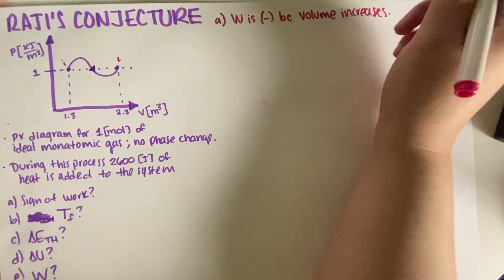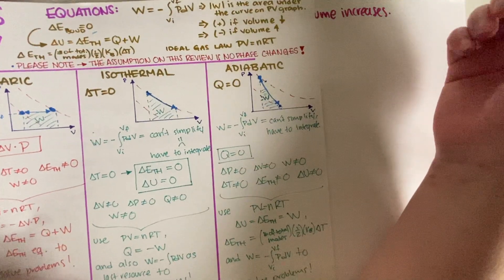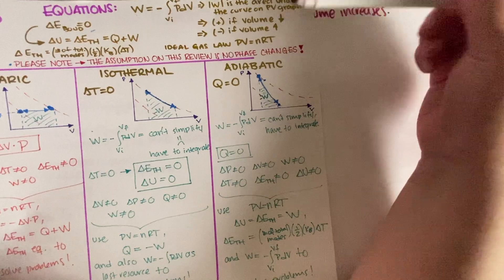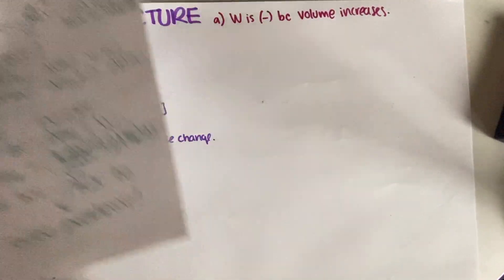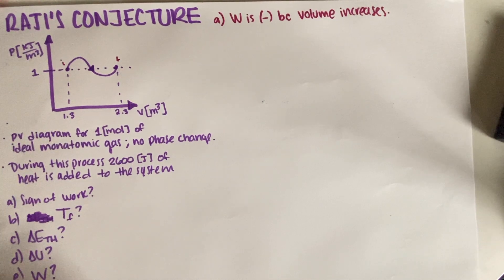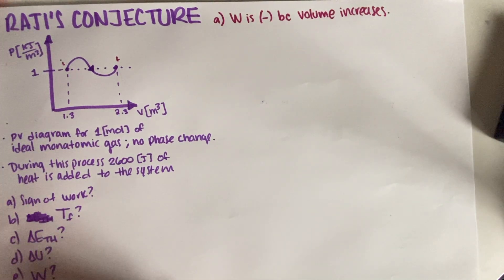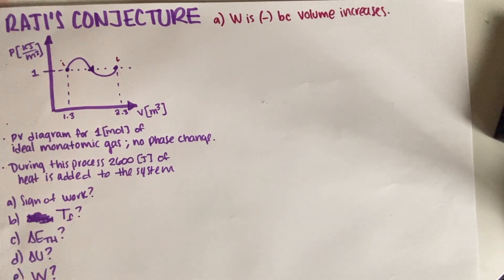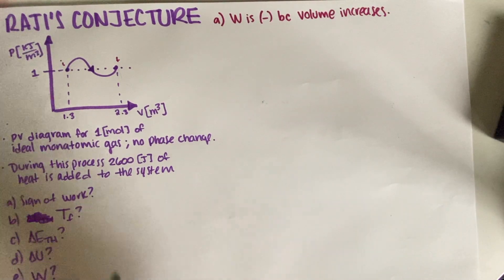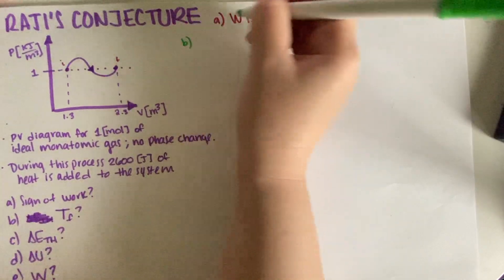There we go. Again, this is something that we saw in the review, negative if volume increases. So, it really is as straightforward as that. So, now we move on, and we have to figure out our final temperature, which is going to be pretty easy, because we do have an ideal gas. So, what we're going to do is just use our ideal gas law.